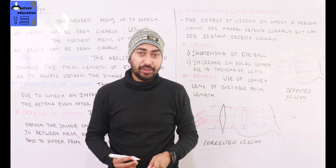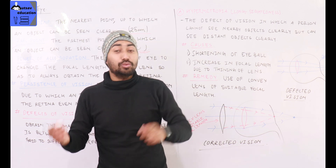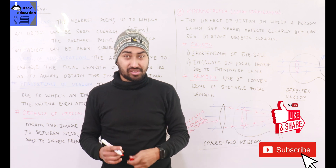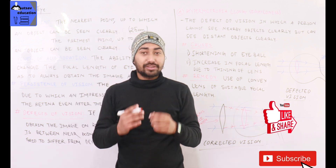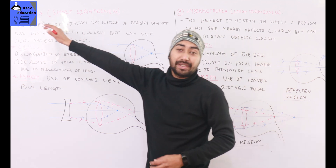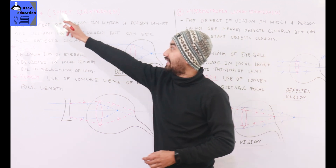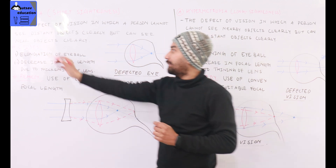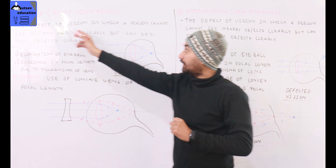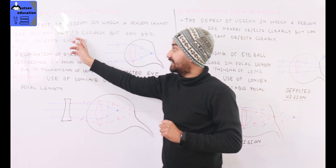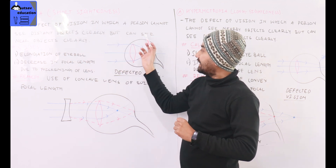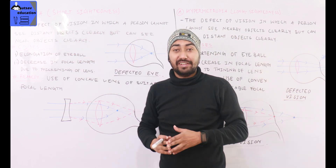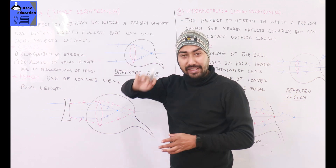Now let's move to myopia, also called short-sightedness. The defect of vision in which a person cannot see distant objects clearly, but can clearly see near objects, is called myopia or short-sightedness.